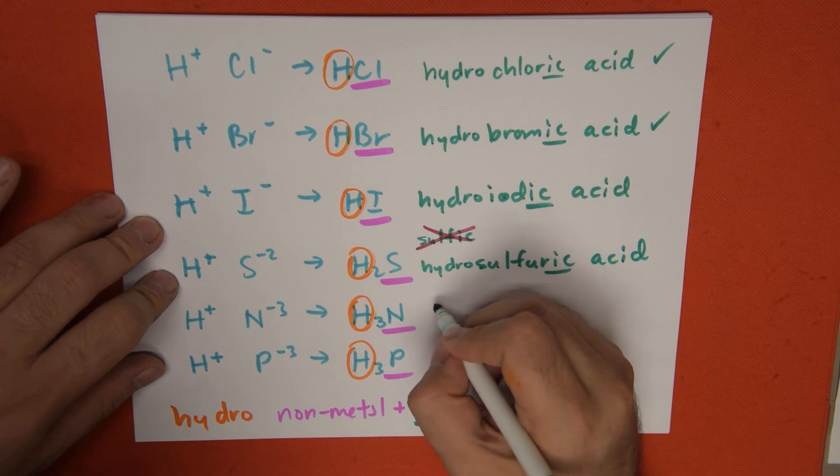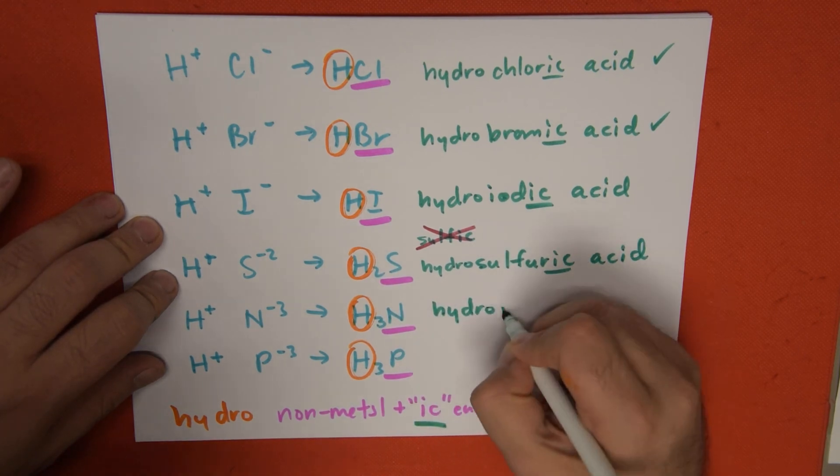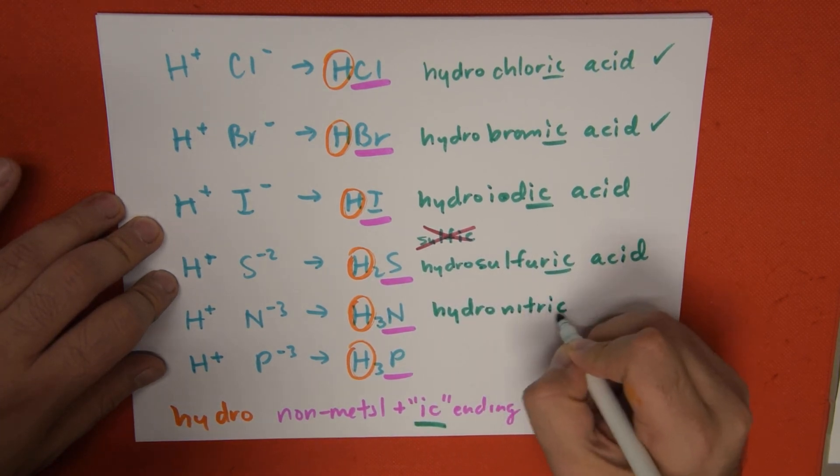Next we have nitrogen. Nitrogen turns into hydronitric or nitric acid.